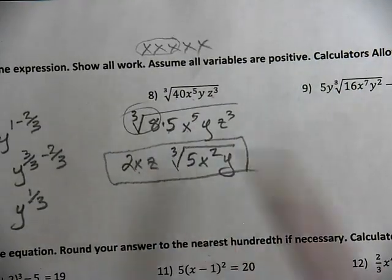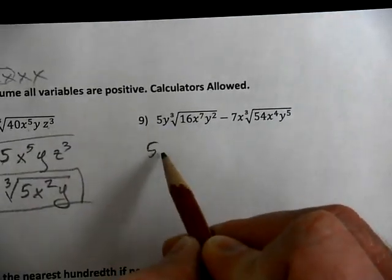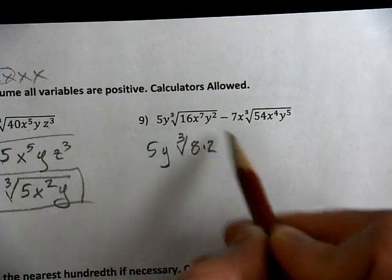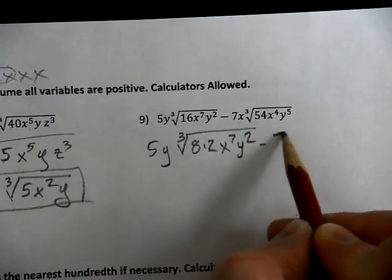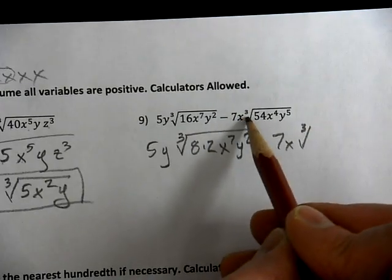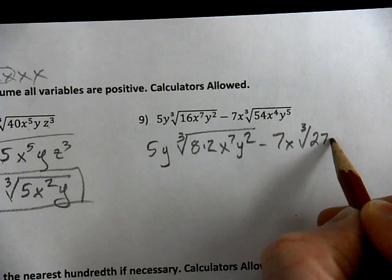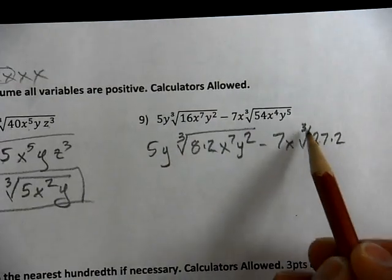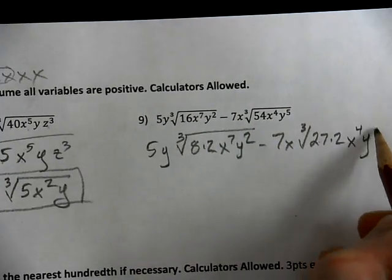You've got to have your index correct. Cube root again. This is the cube root of 8 times 2, that makes 16, x to the seventh, y squared. This is not x cubed, this is the cube root. This is 27 times 2, this is a cube root of a number times 2, x to the fourth, y to the fifth.